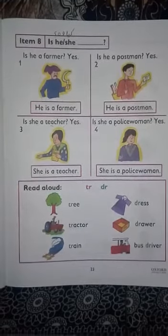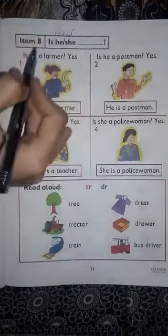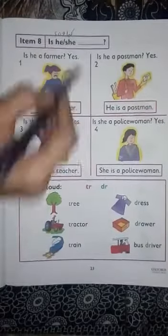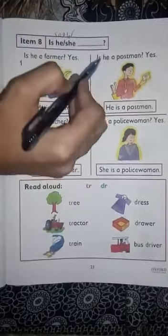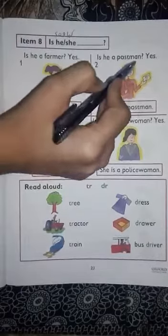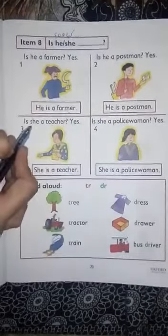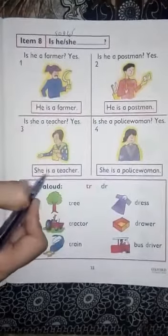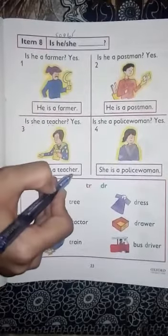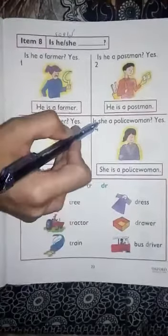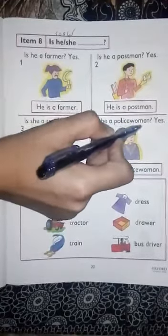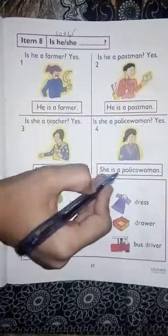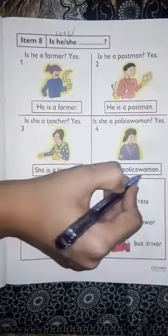Now we are going to discuss some examples from this book. Is she a farmer? Yes, he is a farmer. Is she a postman? Yes, he is a postman. Is she a teacher? Yes, she is a teacher. Is she a policewoman? Yes, she is a policewoman.